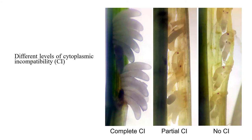When you do these sorts of crosses you get different levels of incompatibility. You can score this quite easily by looking at the eggs and whether they develop or not. If they don't develop, as indicated on the left hand side, you get eggs without pigment appearing. On the right hand side you can see pigment appearing as the embryos develop. Normally in brown plant hoppers you don't see incompatibility, but in this particular cross you do.